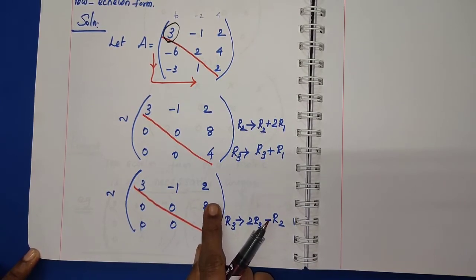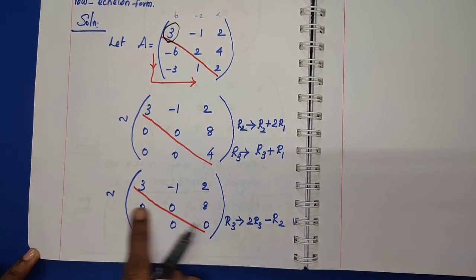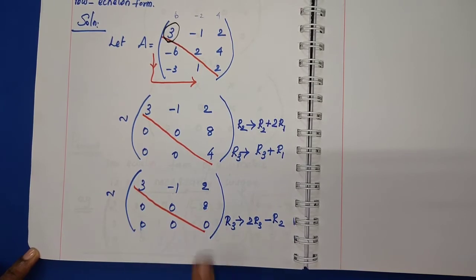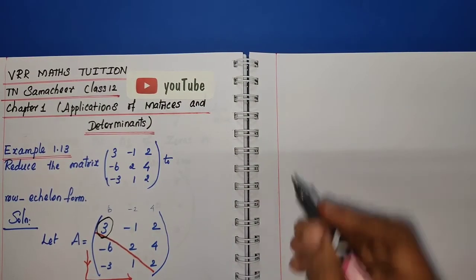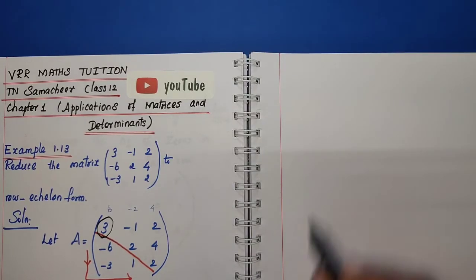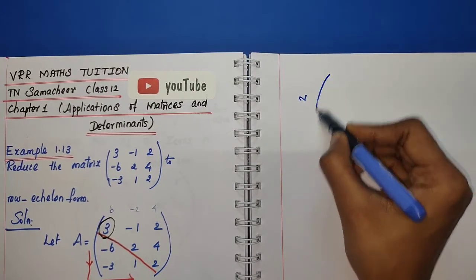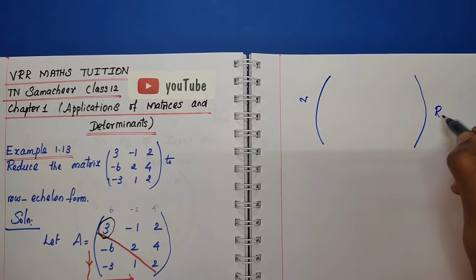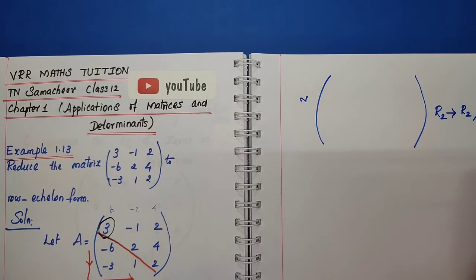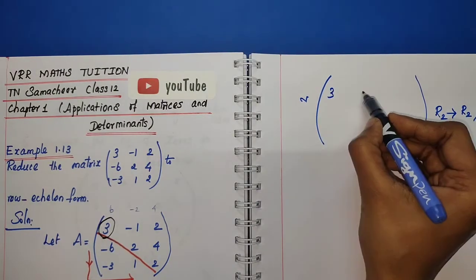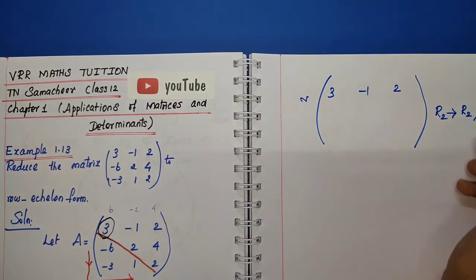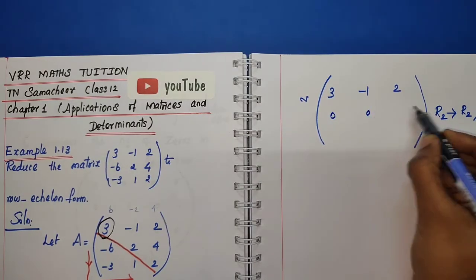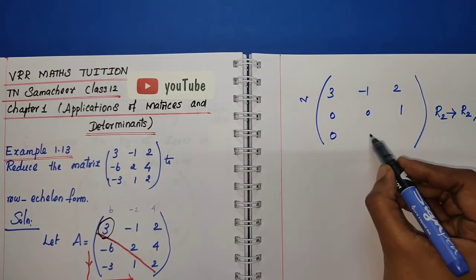Otherwise, you can write the row by dividing it. Second line, the 8 divided by 1. You can write the equivalence to R2 implies R2 divided by 8. First row is 3, -1, 2. Second row is 0, 0, 1. The last row is as it is.